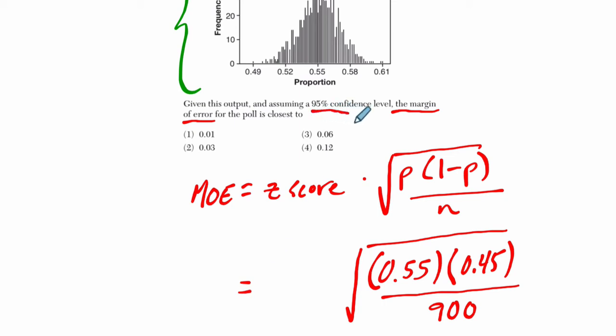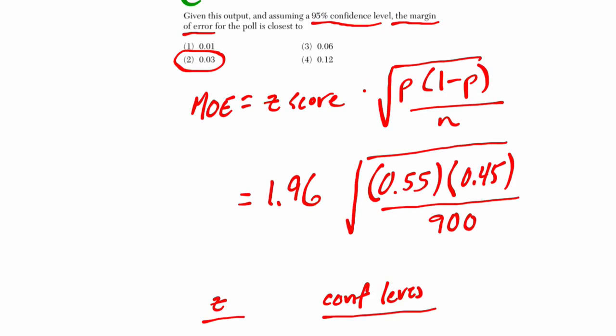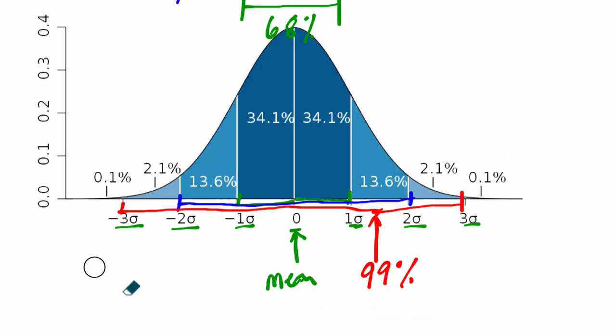They give you a 95% confidence level, and the given z-score for that is 1.96. Then you just calculate this, and you'll get 0.03. Let me say that there are a few z-scores that you should know for given confidence intervals—the z-scores for given confidence levels.